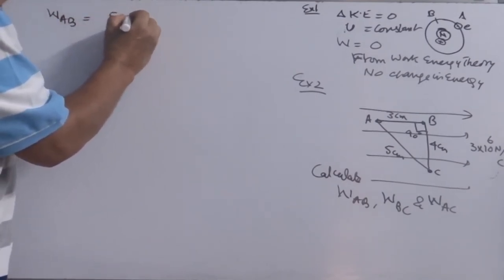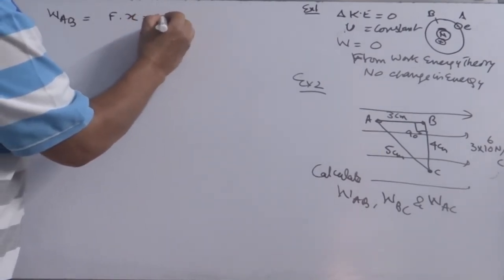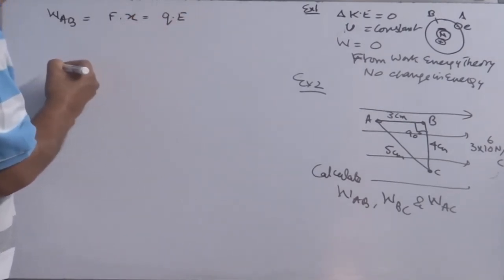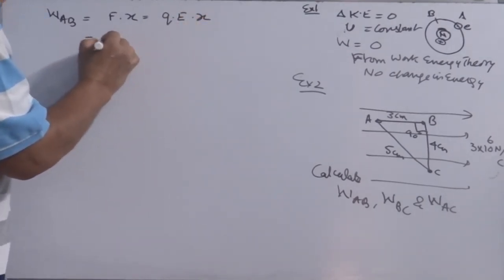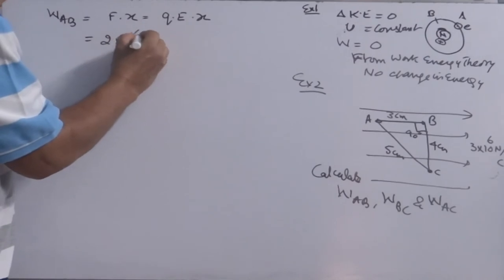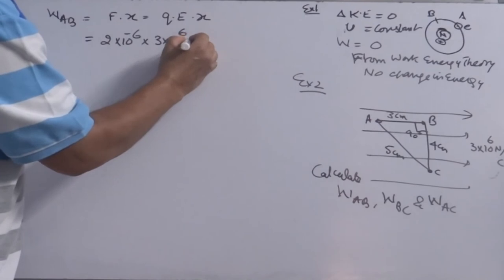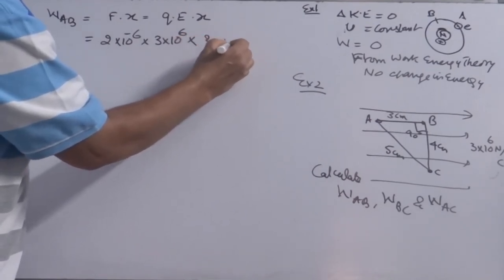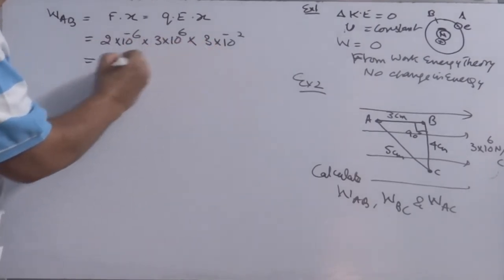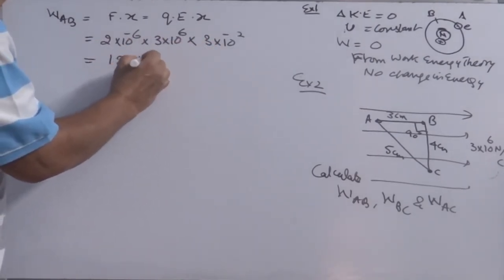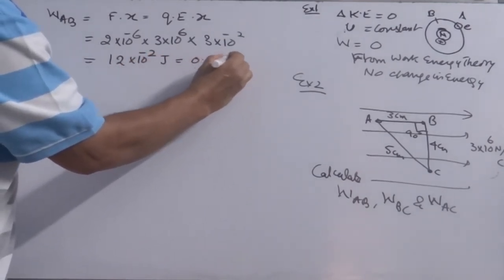Work done from W, A, B first. Work done is F into X, right? F is equal to Q into E, X, Q is 2 micro coulomb, 2 into 10 to the power minus 6. Electric field is 3 into 10 raised to the power 6 meter, 3 cm, 10 raised to the power minus 2 meter, 6, 12 into 10 raised to the power minus 2 joule, that is 0.12 joule.